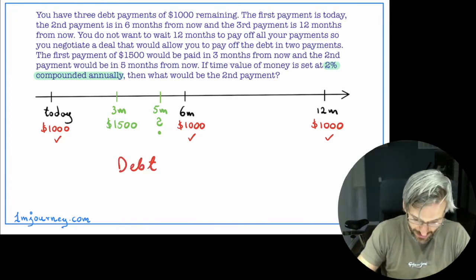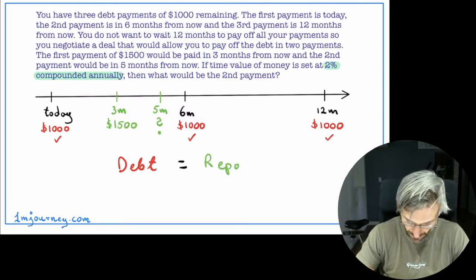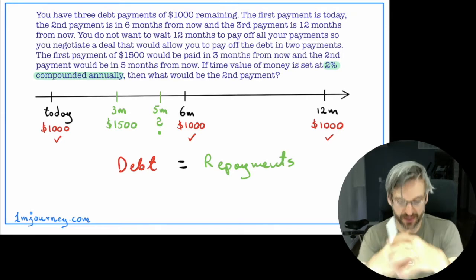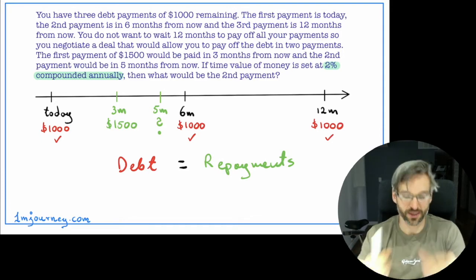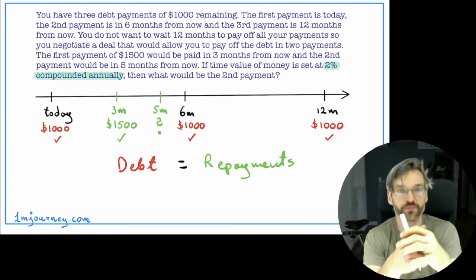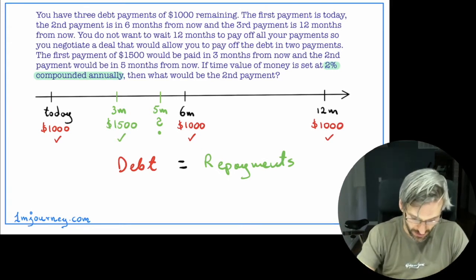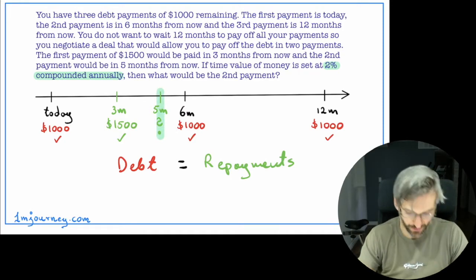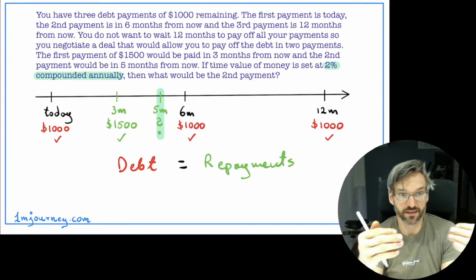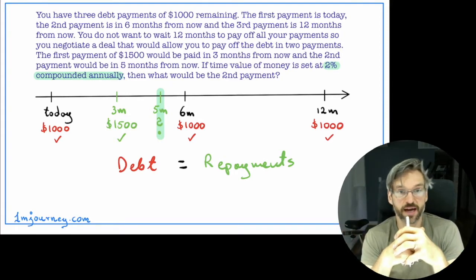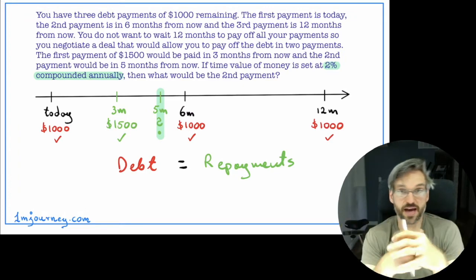We know that our debt is supposed to be equal to our actual repayments. We are changing those repayments — instead of paying $1,000 today, six months, and 12 months, we will be paying at three months and then an unknown amount at five months. If the interest was zero, I could just add the debt — $3,000 — then subtract the $1,500 and get $1,500 left over to repay.